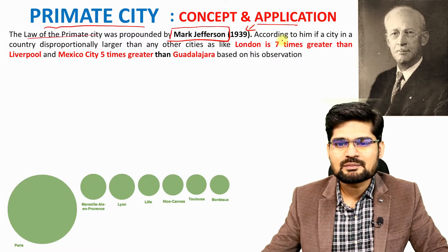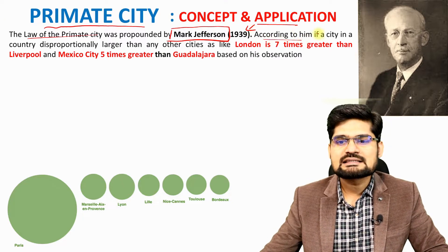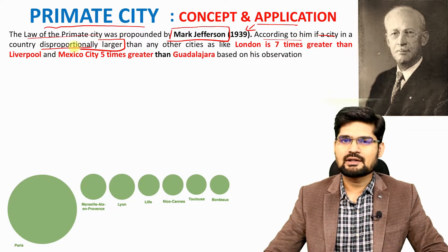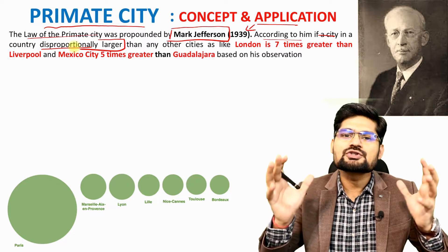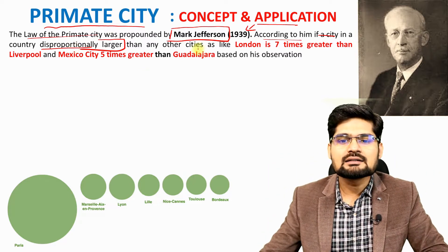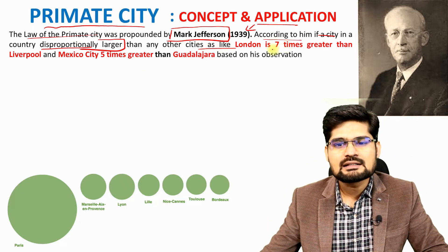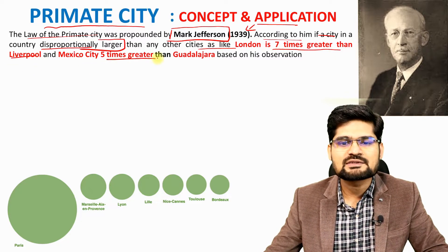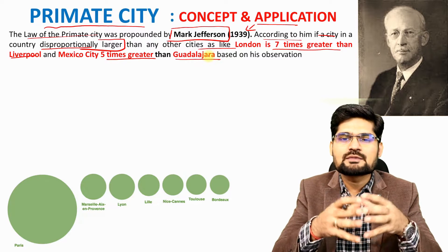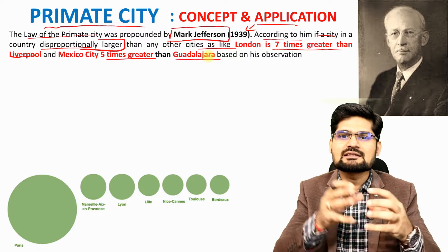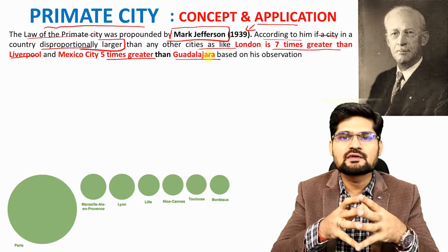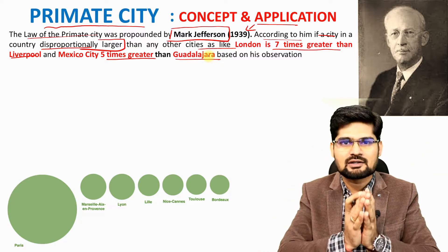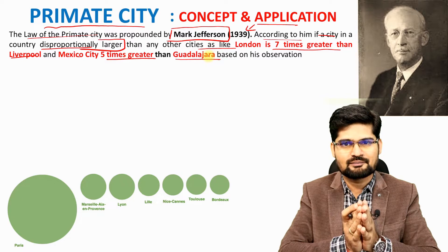According to this concept, one city in a country is disproportionately larger than the other cities. For example, London is seven times greater than Liverpool, and Mexico City is five times greater than Guadalajara. These examples illustrate a disproportionate relationship between the single largest city and the next city in order — the second-ranked city.